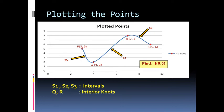In the spline method, the data points are called knots. Points q and r are specifically called interior knots, while points p and s are the exterior knots.